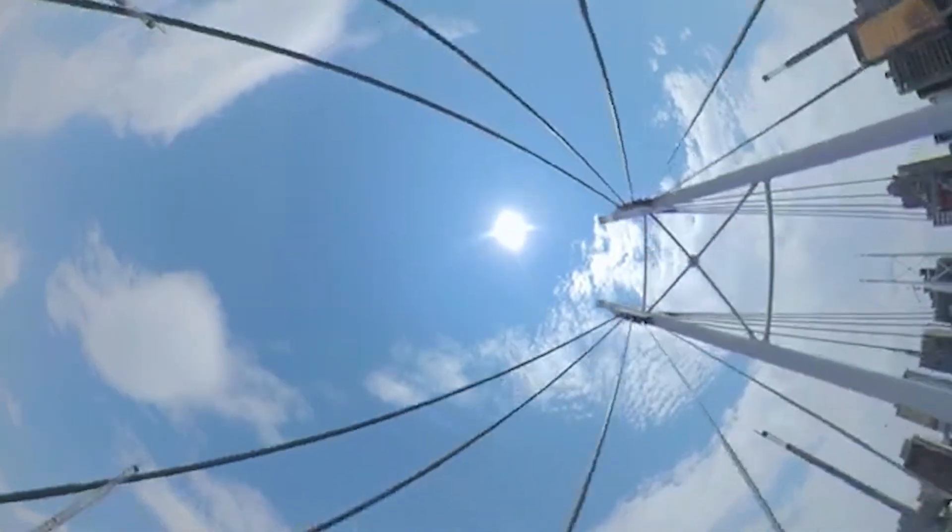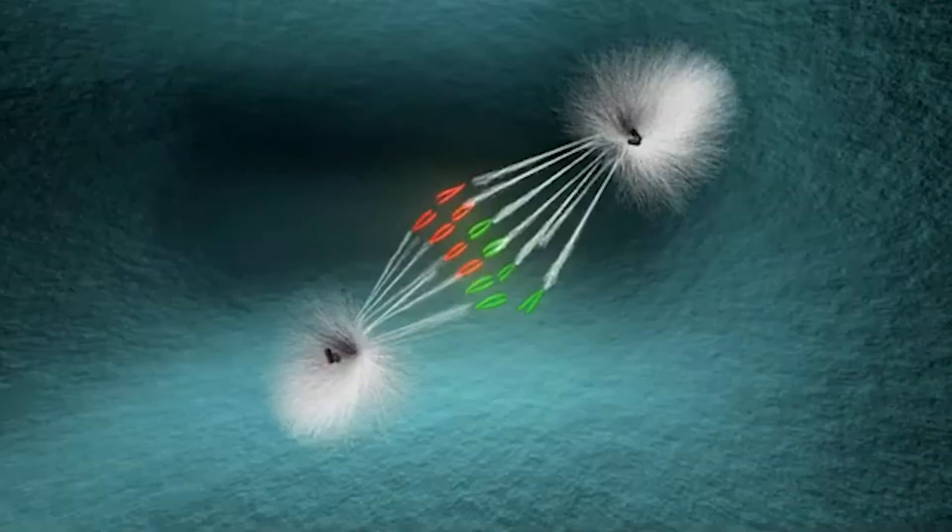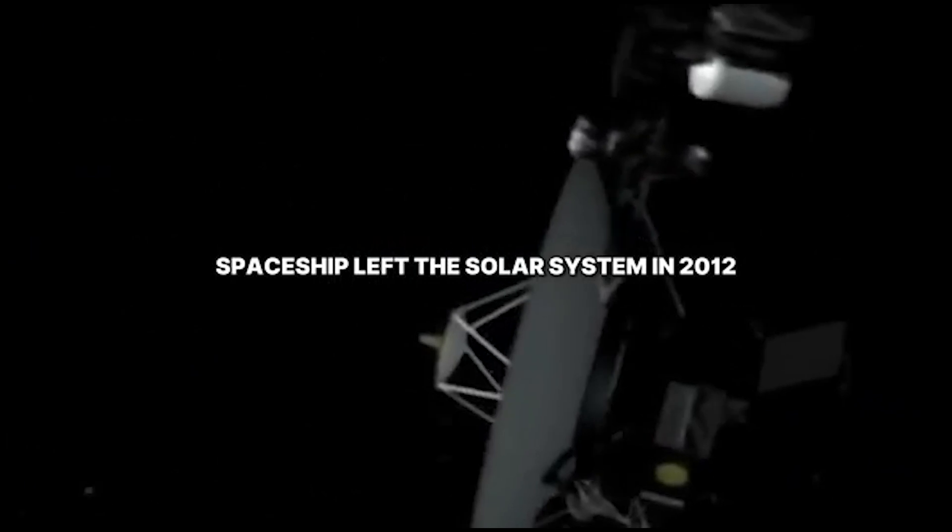What lies beyond this protective barrier? Voyager's discovery suggests that the heliopause is more than just a boundary, it's a gateway to a chaotic, unexplored frontier.